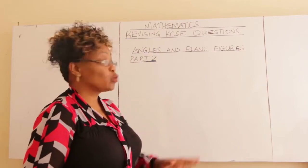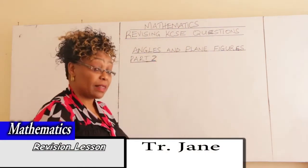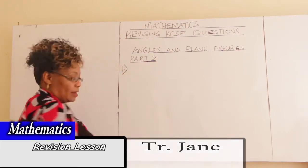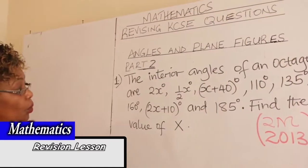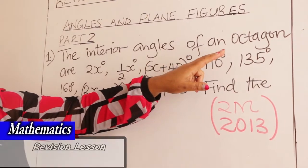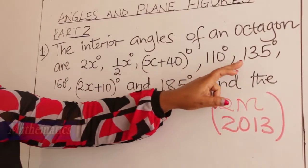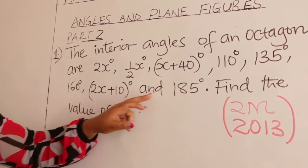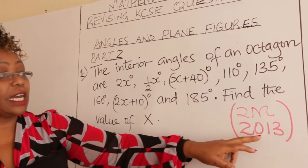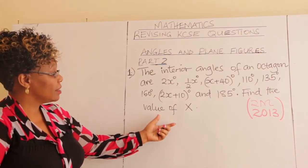Welcome to Part 2 of Angles and Plane Figures. We are dealing with KCSE mathematics questions from past papers. Question number one: the interior angles of an octagon — remember, an octagon has eight sides — are 2x, half x, x plus 40°, 110°, 135°, 160°, 2x plus 10°, and 185°. Find the value of x. This question came in 2013 and 2018, carrying two marks.